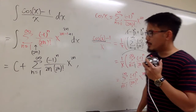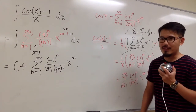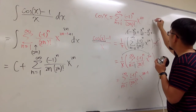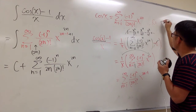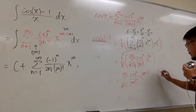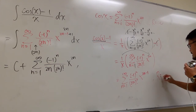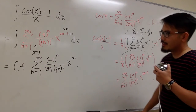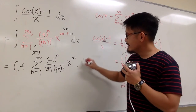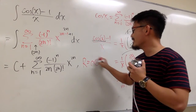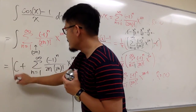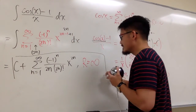At the very end, we have to talk about the radius of convergence. For cosine, we have r as infinity, and when we do this kind of operation you will also get r as infinity. When we integrate this, r is also infinity. This right here completes it.